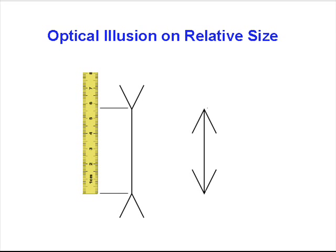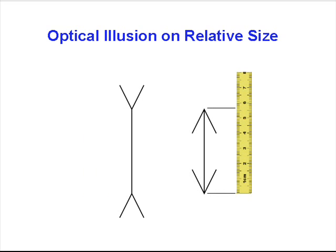Yet, if we measure them, first the one on the left, and then the one on the right, we will see that they are in fact exactly the same length. This makes it seem as though our senses have deceived us.